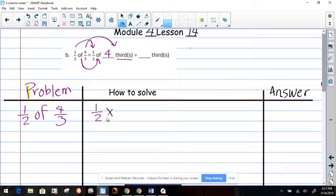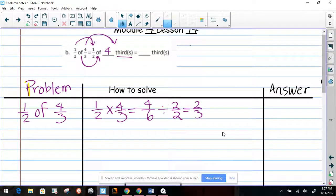So one half of four thirds, that's the first way. This is one way to do it. Four times one equals four, and two times three equals six. And now you know that these two can be divided by two, and the answer is two thirds. That's the easy way, so the answer will be right here, two thirds.